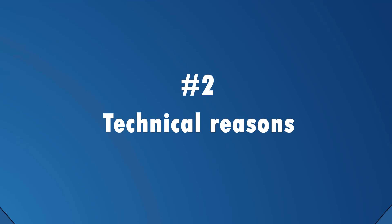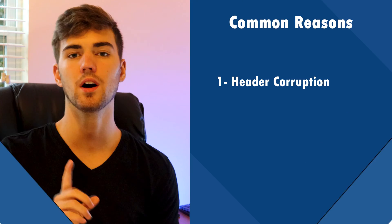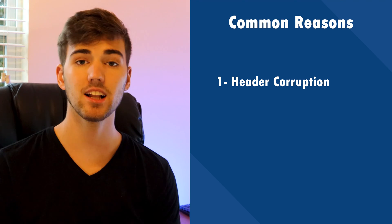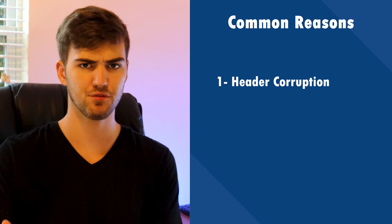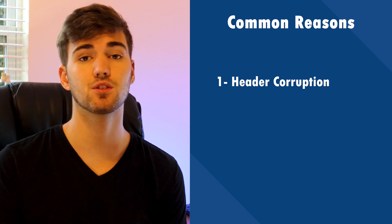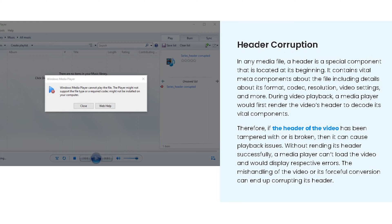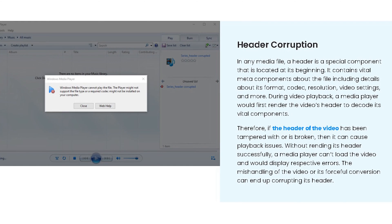We can also dive deeper to find some more complex reasons for video corruption, and if you're a tech geek, you might be familiar with some of these factors. Reason one — header corruption. The header is the element that stores all the information about a given file. For instance, the header contains information regarding the file name, the resolution, and the codec. Every time you play a video, the media player uses the header to access all of the relevant information.